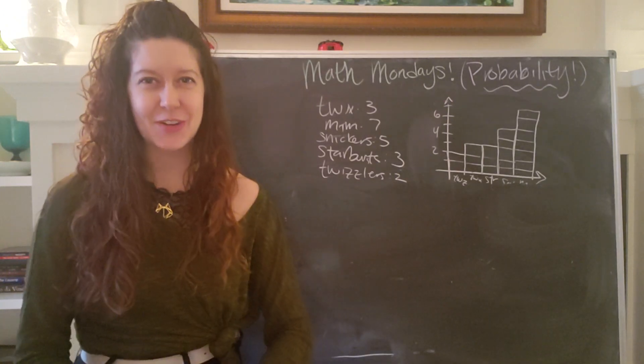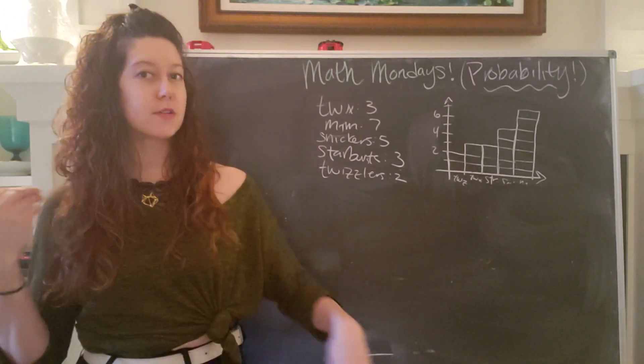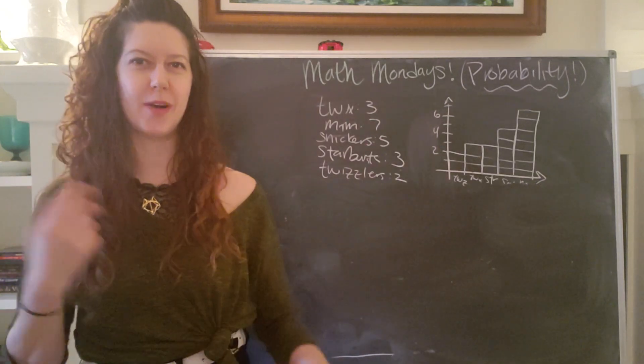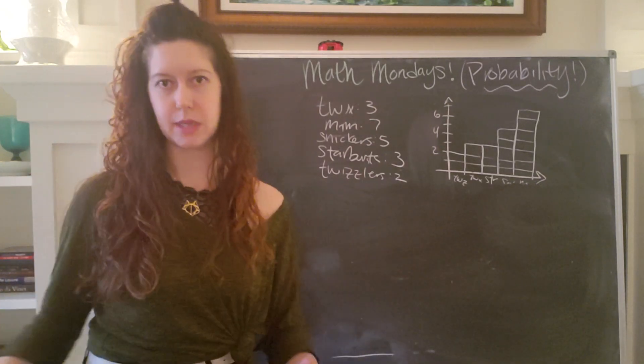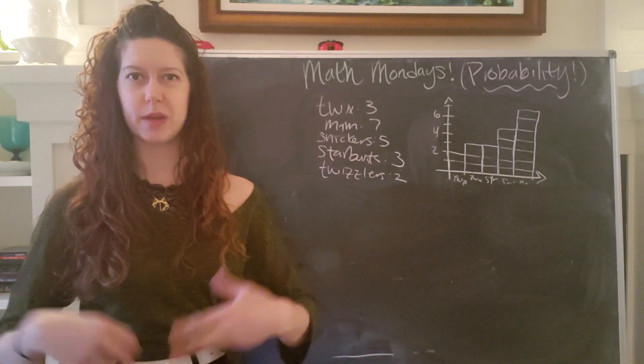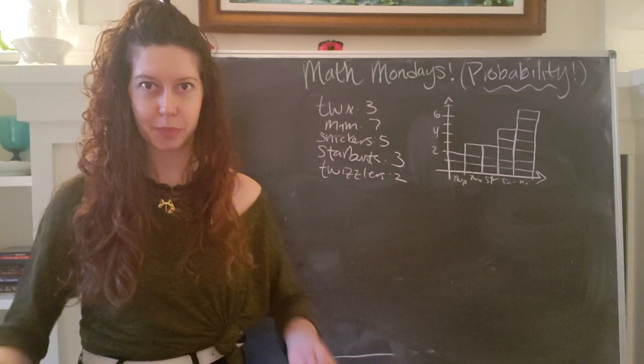The second video is going to dive into a slightly more complicated topic, and that's also going to allow us to talk about things like average and median. And then the third video is going to look at what it means to have a continuous probability distribution.